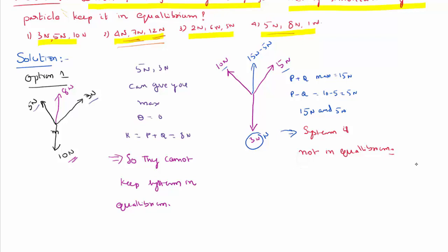5 and 8 can give you at the best 5 plus 8, that is 13, and can give you a minimum of 8 minus 5, which is 3 Newton. But this is equal to 1 Newton, therefore this 1 Newton cannot be cancelled by any resultant force between 13 and 3.